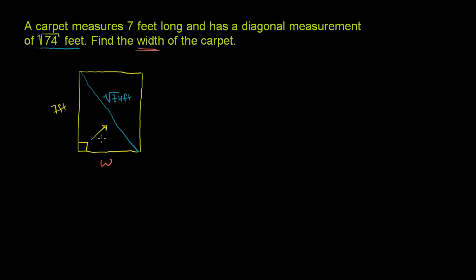And the shorter sides are W and 7. And the Pythagorean theorem tells us that the sum of the squares of the shorter sides will be equal to the square of the hypotenuse, or the square of the longest side.